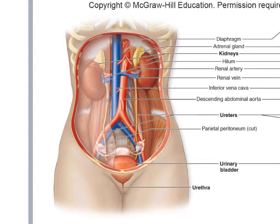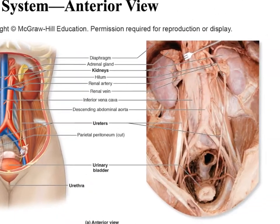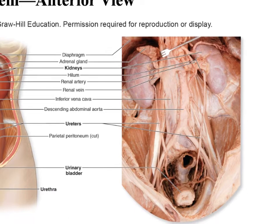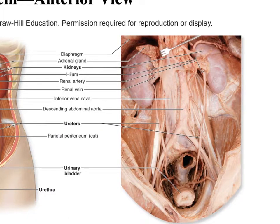The kidney is retroperitoneal — it's behind the peritoneum. The ureters go on the inside of the peritoneum and then down through the bladder. Here's what it looks like on the cadaver: you can see the kidney, the hilum, blood vessels entering and exiting. That's a ureter, and the bladder appears relaxed after dehydration.